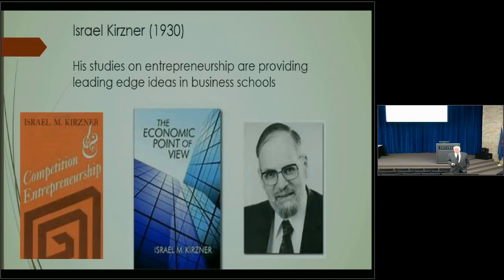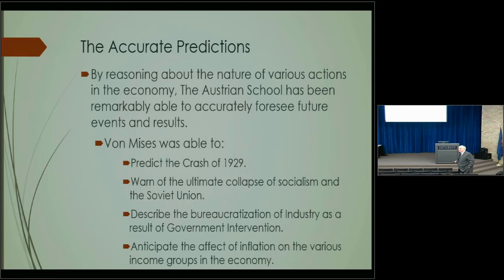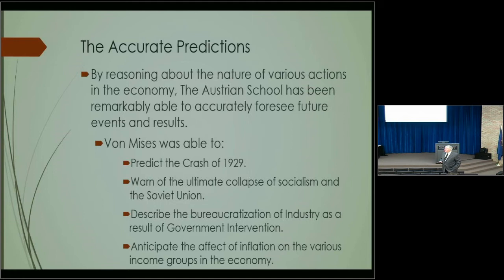The Austrians accurately predicted the crash of 1929, the crash of 2000, and the crash of 2007. They warned of the collapse of communism and socialism, saying that system will not work under any conditions — there's no price system, no way of organizing the economy. They also described the bureaucratization of industry due to government regulation. Your situation going into the workforce is tougher because industry has become less entrepreneurial and more bureaucratic.